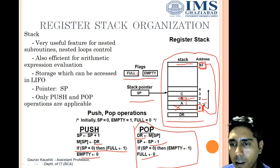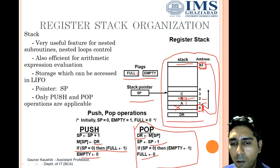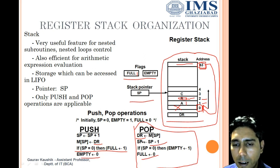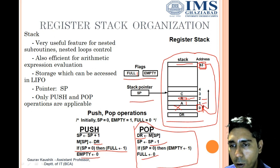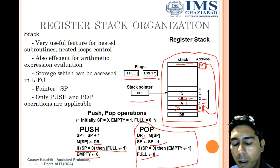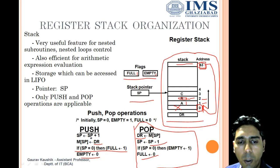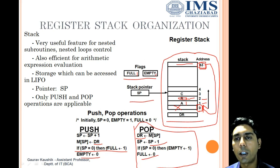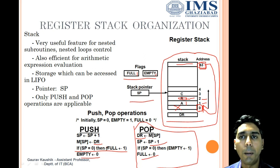Finally, when the stack pointer reaches position 1 and we pop the last element 'a', it is provided to DR and SP is decremented by 1, pointing to 0. Now the condition SP = 0 is true, so the empty flag becomes 1. Once empty is 1, no more pop operations can be performed on this stack.